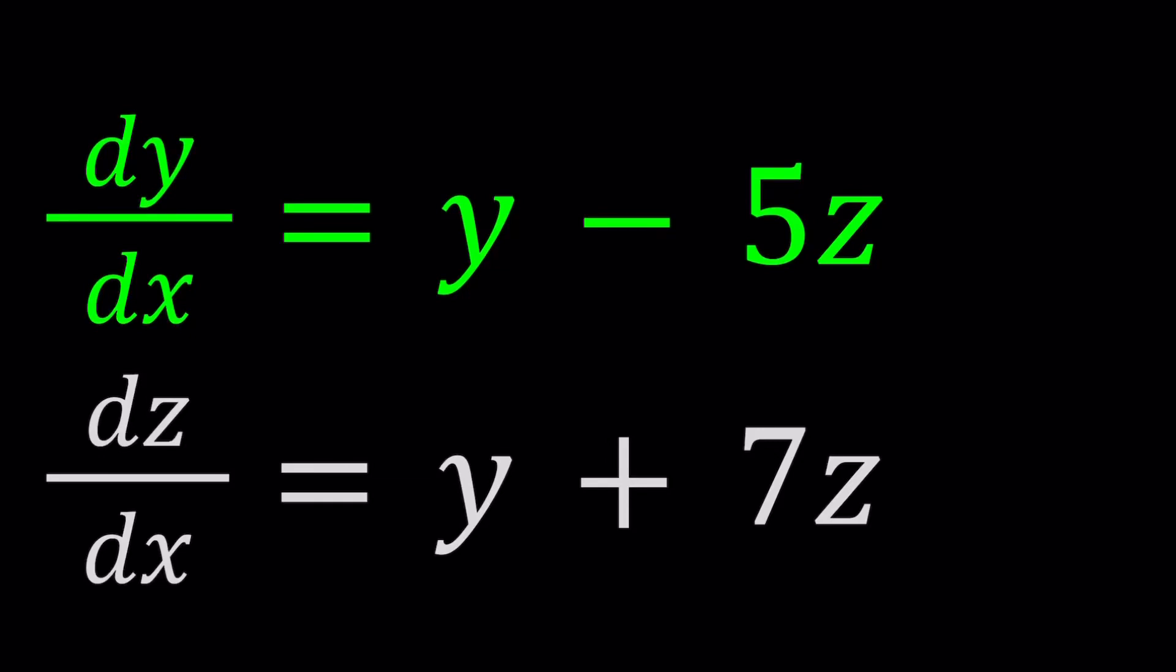Hello everyone. In this video, we're going to be solving a system of differential equations. We have dy/dx = y - 5z and dz/dx = y + 7z. y and z are both functions of x, and we're going to be solving for y and z. We're going to find y and z in terms of x.